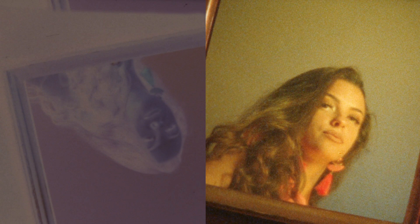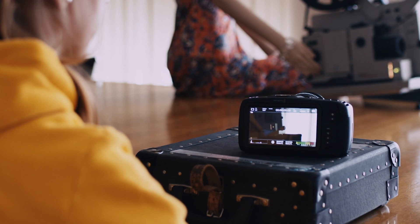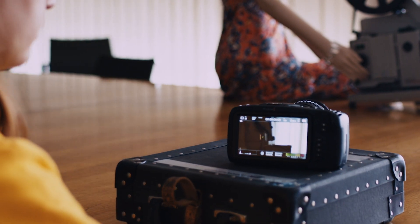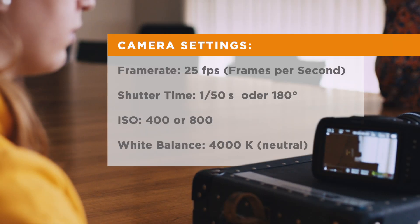Besides the resolution of 6K, we recommend the following camera settings. Frame rate, 25 frames per second. Shutter speed, 180 degrees or a 50th of a second. This is the same at 25 FPS.